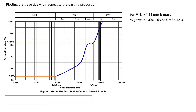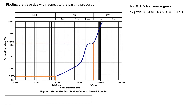For MIT, anything greater than 4.75 millimeters is considered gravel. To determine the percent gravel, we go to 4.75 millimeters on the graph and read the corresponding passing proportion. In this case it is 63.88%, but since we want greater than 4.75 millimeters, we subtract from 100, giving us 36.12%. We then determine the percent fines, which is the passing proportion at 0.075 millimeters — in this case it is 4.88%.